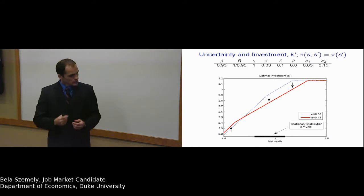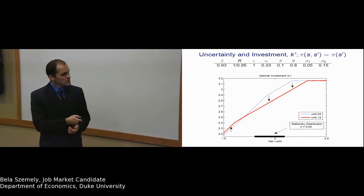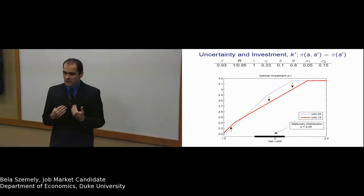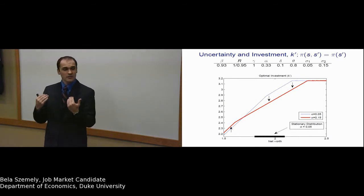And finally, notice that the black line depicts the support of the stationary distribution of firms when uncertainty is low. When these firms realize that uncertainty increased in the economy, they will all decrease their investment.